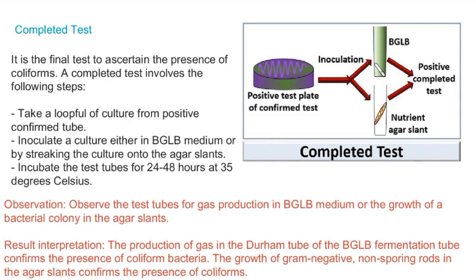The result interpretation is as follows: the production of gas in the Durham tube of the BGLB fermentation tube confirms the presence of coliform bacteria. The growth of gram-negative, non-sporing rods on EMB agar confirms the presence of coliforms.